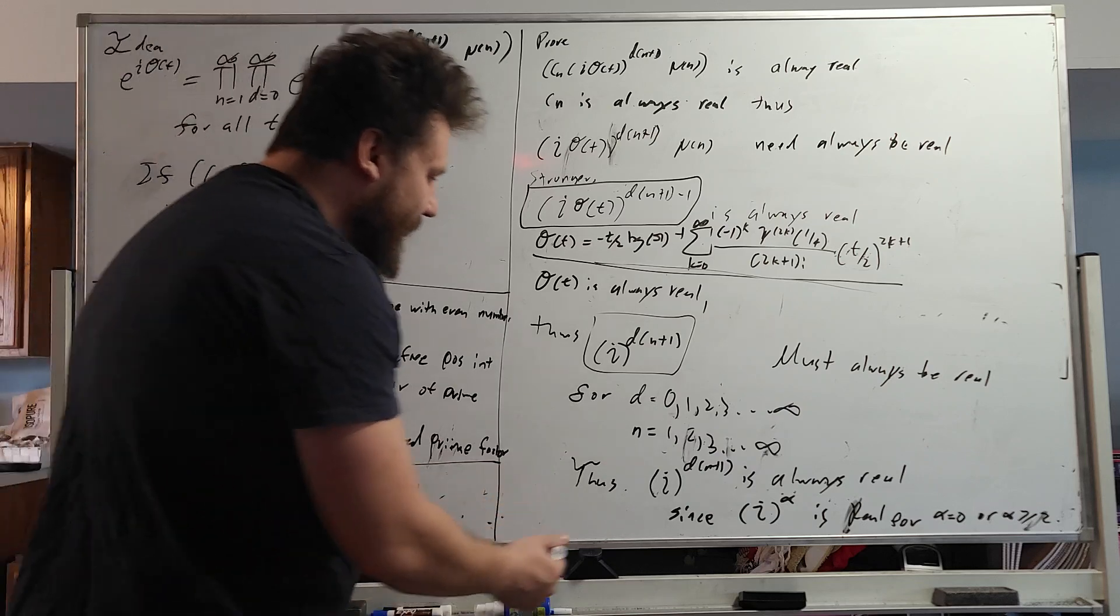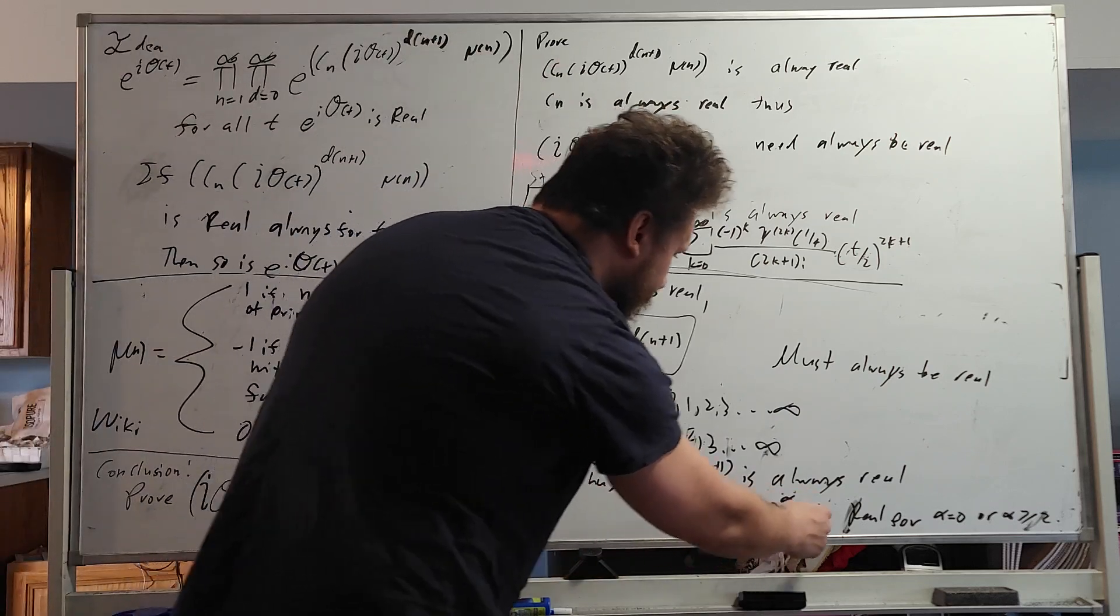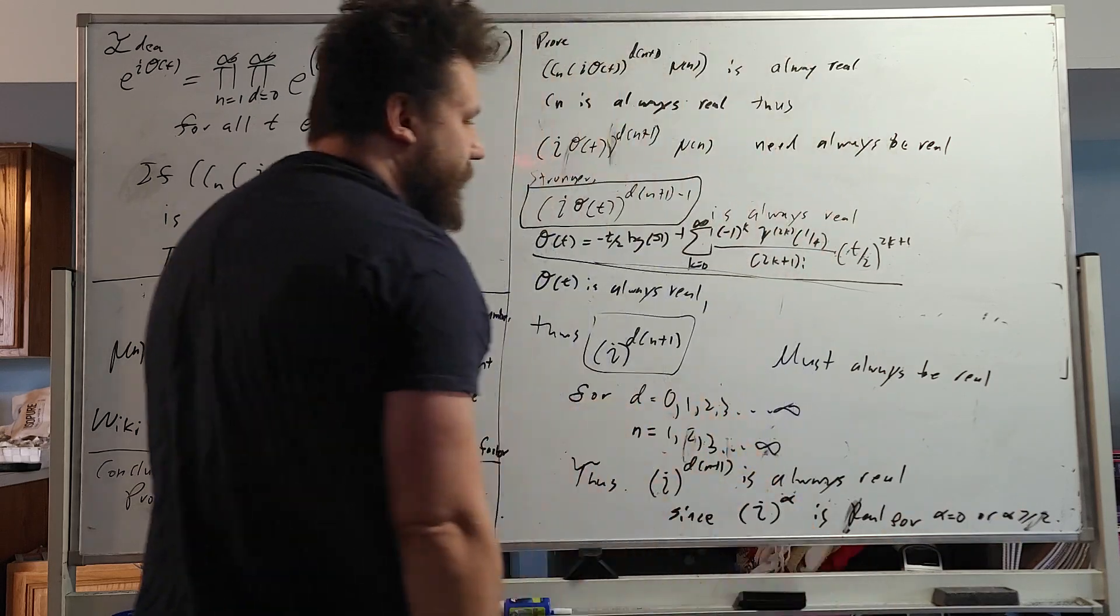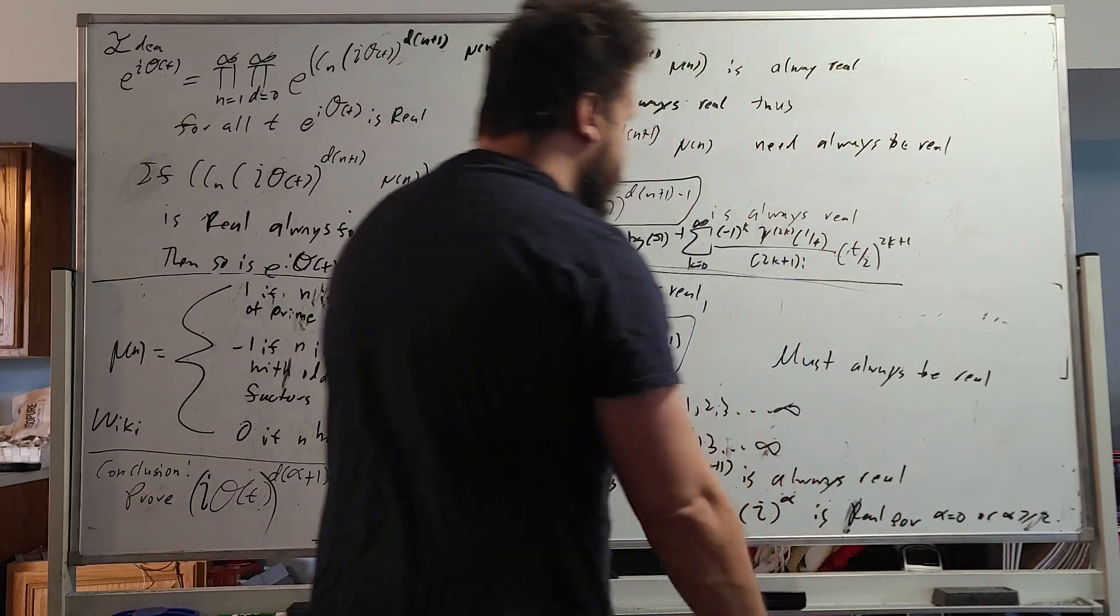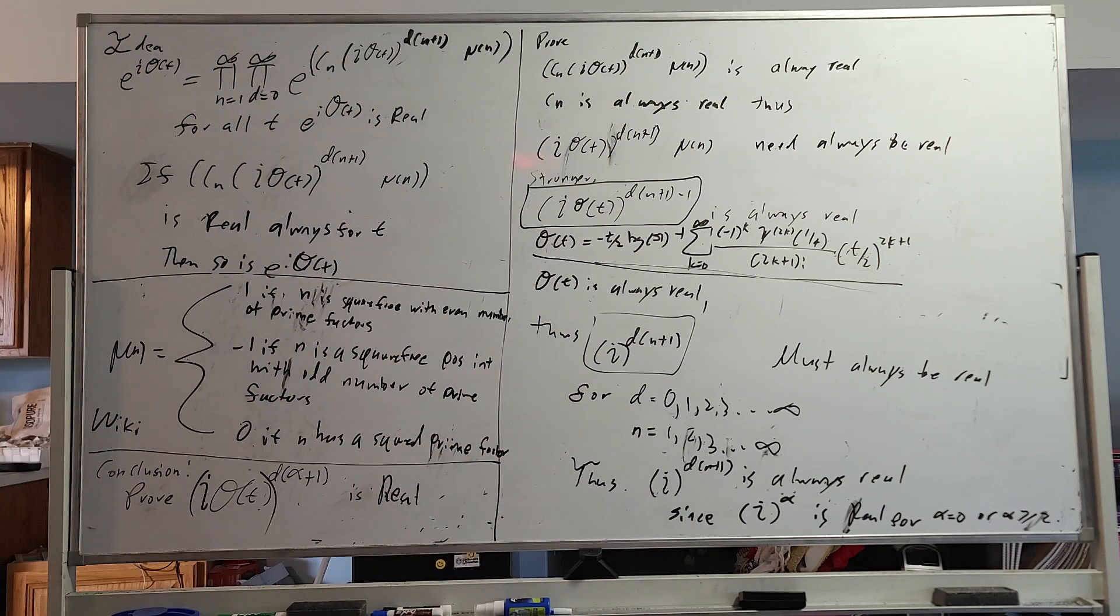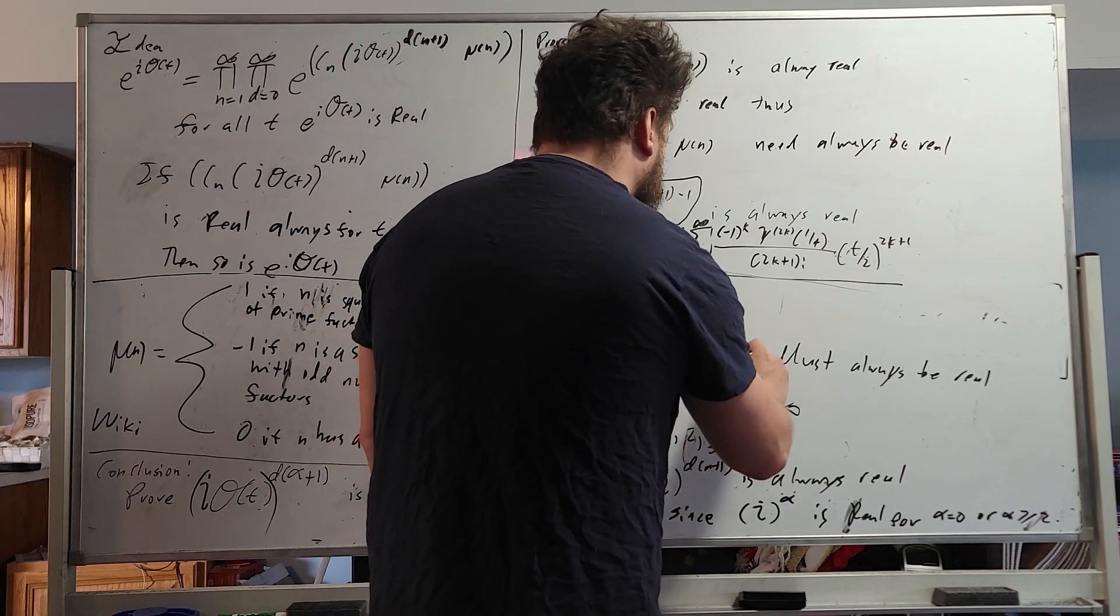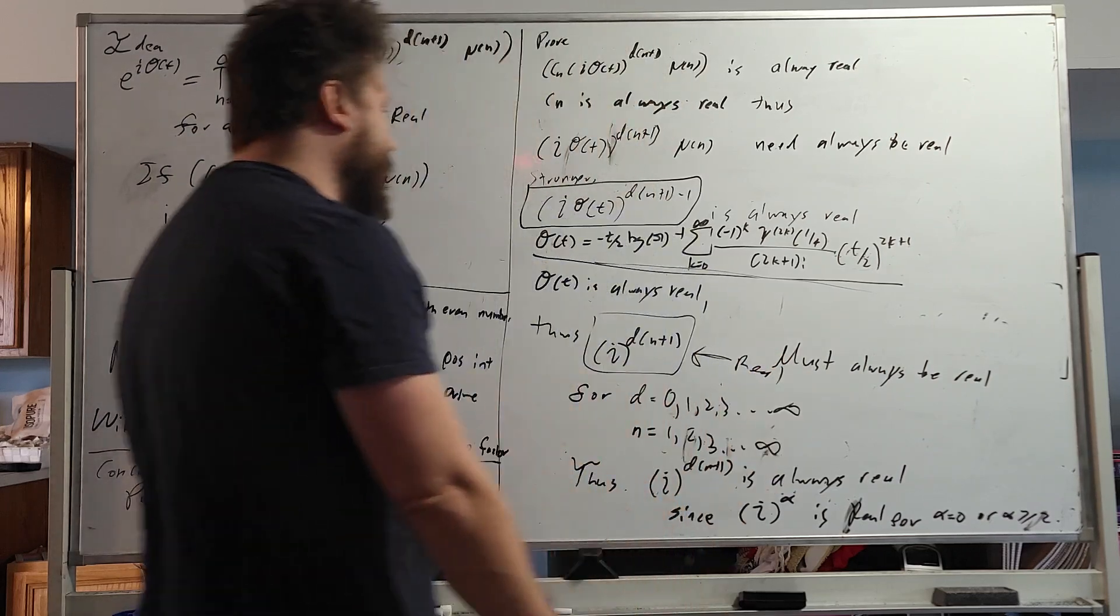So this is very right. Since i to the alpha is real for alpha equals 0 or alpha greater than or equal to 2. So yes, this, in fact, is always real. So that's the whole idea.